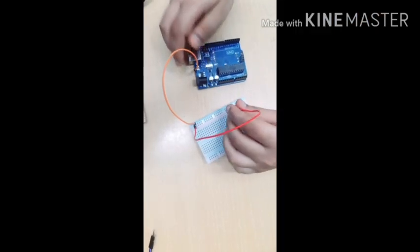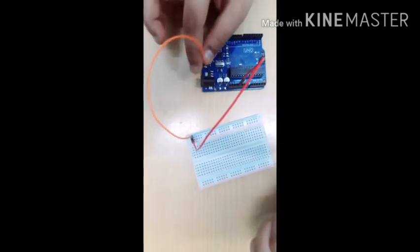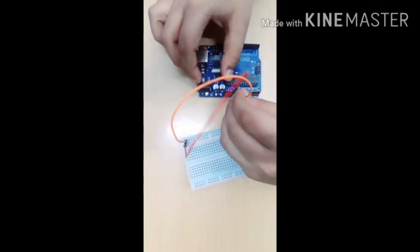Today I am going to construct ultrasonic radar with the help of Arduino kit. Let's see the components. Connect the positive wire to 5 volts and negative wire to ground.